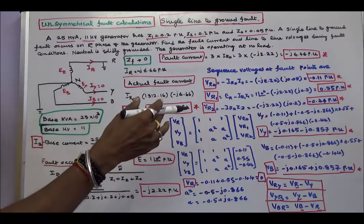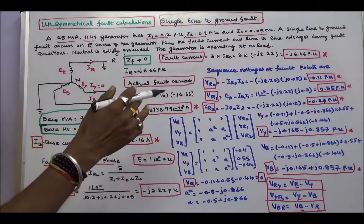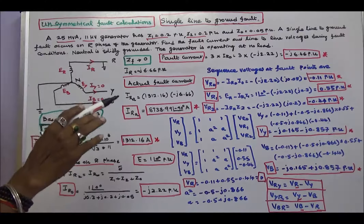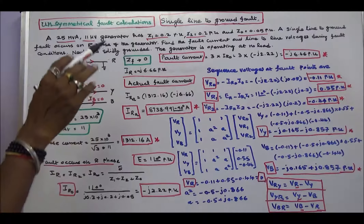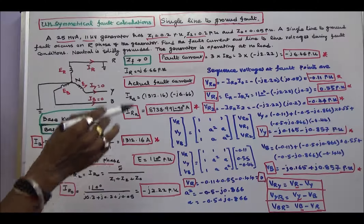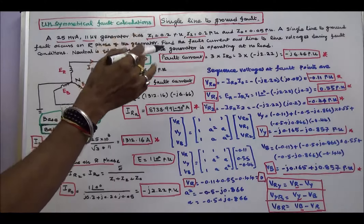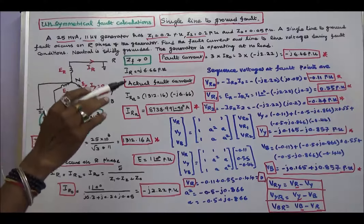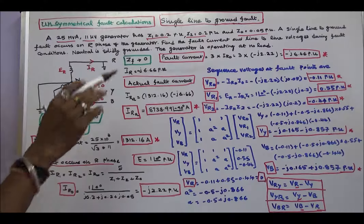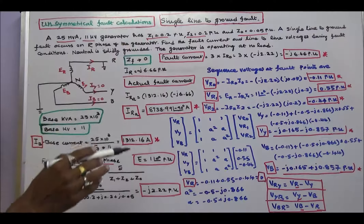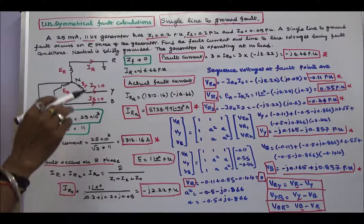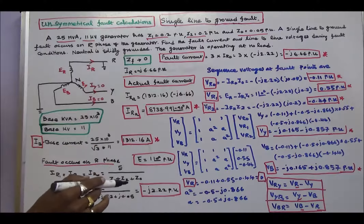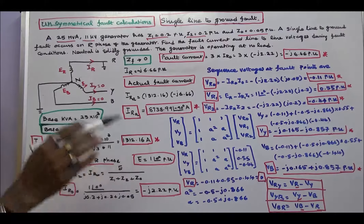This class we work out one problem. A 25 MVA, 11 KV generator has positive sequence impedance Z1 equal to 0.2 per unit, negative sequence impedance Z2 equal to 0.2 per unit, and zero sequence impedance Z0 equal to 0.05 per unit. A single line-to-ground fault occurs on R phase of the generator. Find the fault current and line-to-line voltages during the fault condition. The neutral is solidly grounded, meaning fault impedance ZF equals 0, and the generator is operating at no load.